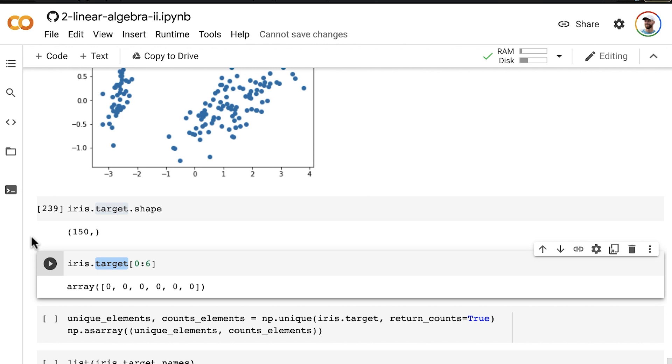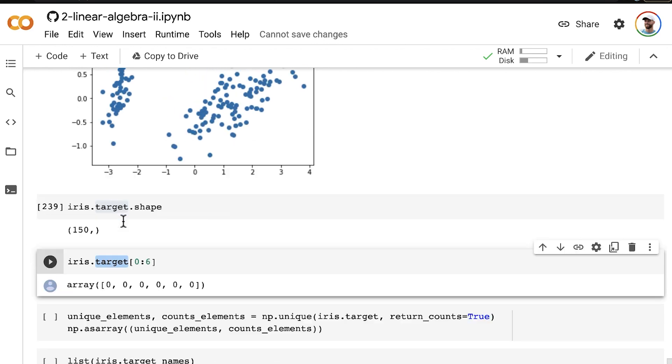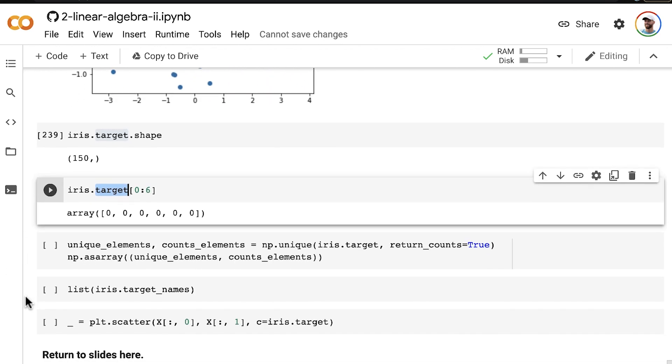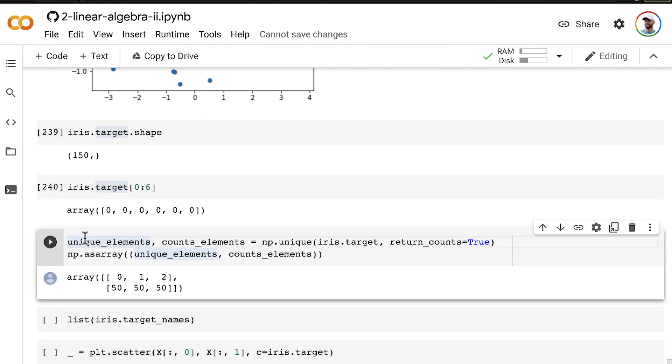We're just going to use them to add color, a third dimension, to our plot of irises along two principal components. So these two lines of code here show that for our 150 flowers,